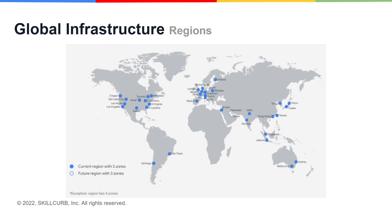Within a region, you will find three or more zones, depending on the region. As a general rule, you should understand that communication within a region will always be quicker and more cost-effective than cross-region communication.